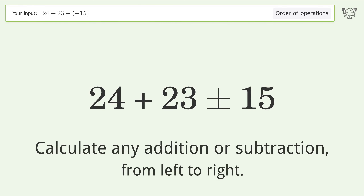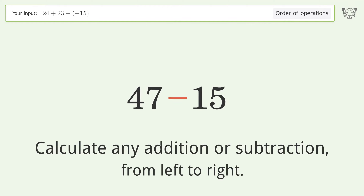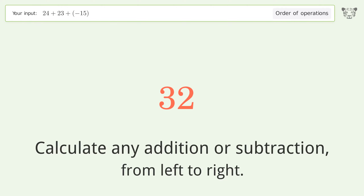First, calculate any addition or subtraction from left to right: 24 plus 23 equals 47. Then, 47 minus 15 equals 32. So the final result is 32.